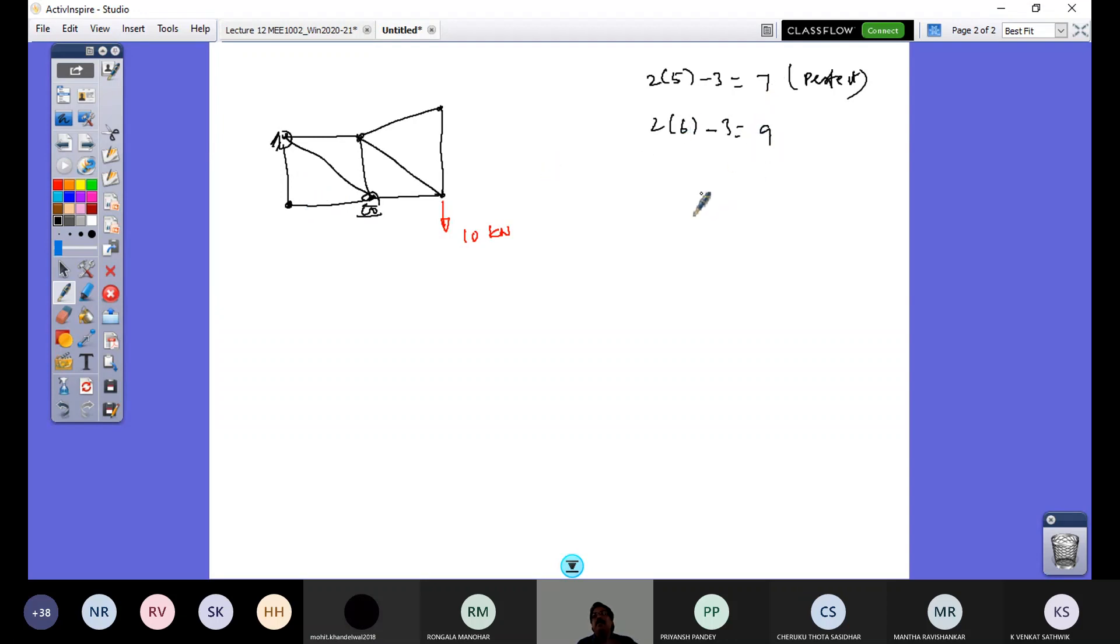So now when I ask you to analyze this, you can just by observation put this is zero force member, this is zero force member, because this is a joint with only two members and there is no load. So two members only are there. And for equilibrium of this joint, both should be zero force member. That's the idea.